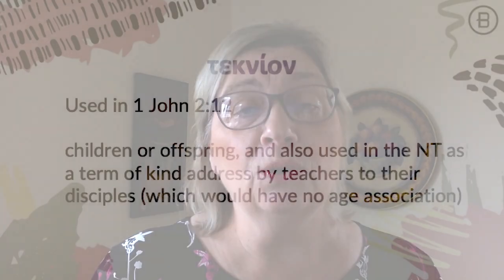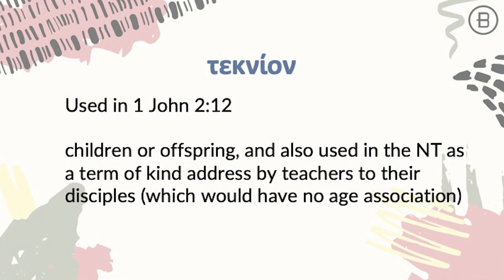As I took a detailed look into this passage, I noticed something in the Greek that was very interesting — John's use of the word we have translated here as children. In verse 12, John starts off by saying, 'I am writing to you, dear children, because your sins have been forgiven on account of his name.' Now John uses the Greek word here, technion. That word does mean children or offspring, but it's also used in the New Testament as a term of kind address by teachers to their disciples. The pupils or disciples were called children by their teachers.